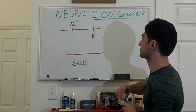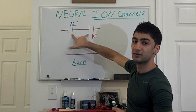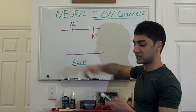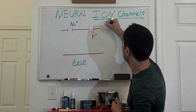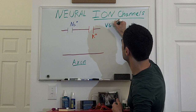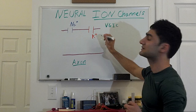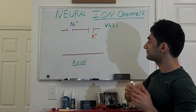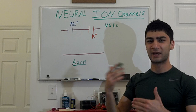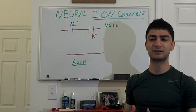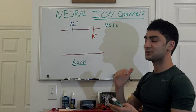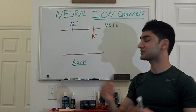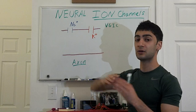So what happens when an action potential is triggered — these ion channels are voltage-gated, so they're called voltage-gated ion channels. You might see an abbreviation that says VGIC; all that means is voltage-gated ion channel. Once a certain threshold is reached in the cell membrane, it triggers these voltage-gated ion channels to open.